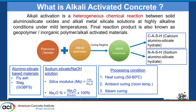Alkali activation is a heterogeneous chemical reaction between two groups of materials. It has two reactants. The first reactant is usually called a precursor or the binder — a solid aluminosilicate-based material. Generally we use fly ash and slag as the precursors. This binder is reacted with an alkali activator; generally we use sodium silicate or sodium hydroxide solution.